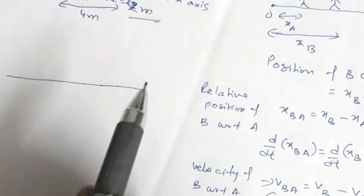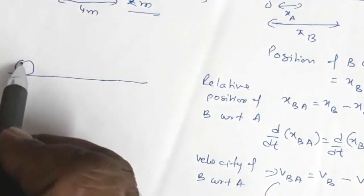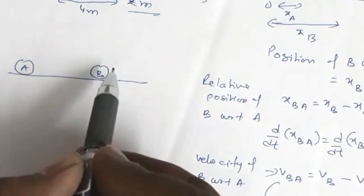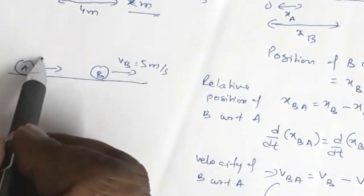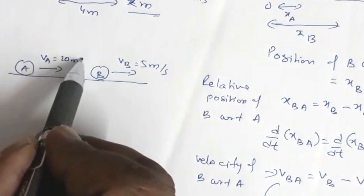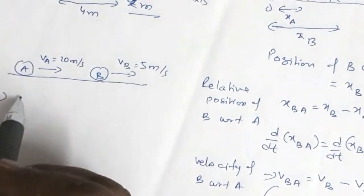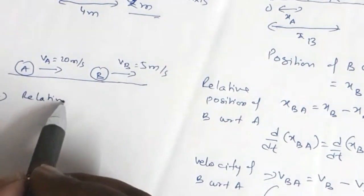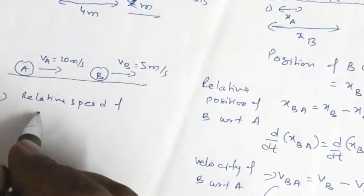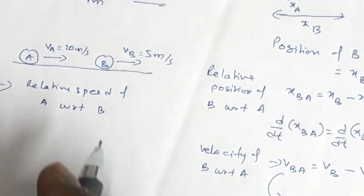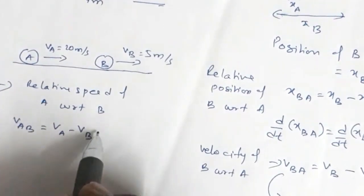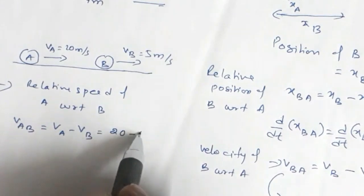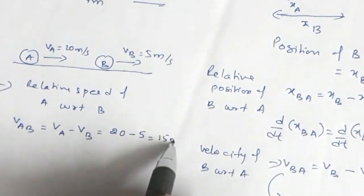Let us apply this concept in a problem. Suppose A is moving in this direction with a speed of 20 m/s and B is moving in the same direction with a speed of 5 m/s. They ask you to find the relative speed of A with respect to B. That means VAB = VA − VB = 20 − 5 = 15 m/s.